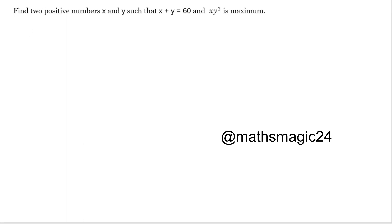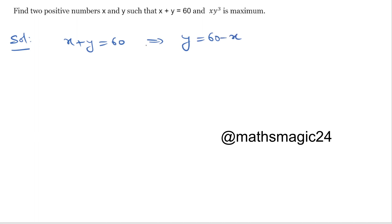Today's question is: find two positive numbers x and y such that x plus y equals 60 and xy³ is maximum. Since x plus y equals 60, we can say y is equal to 60 minus x. So our function becomes f(x) equals x times (60 minus x)³, replacing y with 60 minus x.